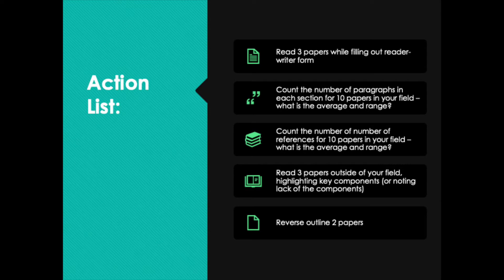We have reached the end of the lesson. Here is your action list for this week. The first thing you're going to do is read three papers from your field while filling out the reader-writer form. As you read the papers, write down the bullet points for the background and all of the other key elements. If those key elements are hard to find, then the authors didn't do a good job at showing those key elements.